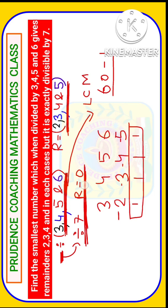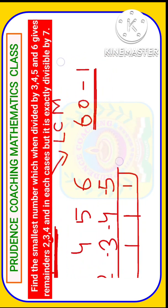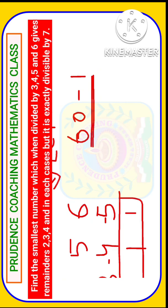But along with that, in this question another trick is there, that is this number must be completely divisible by 7. So here 60 minus 1 is not divisible by 7. 60 minus 1 is 59, and 59 is not divisible by 7.